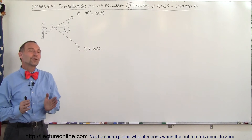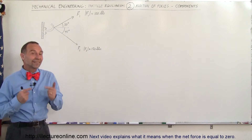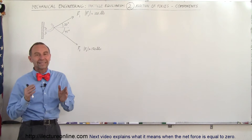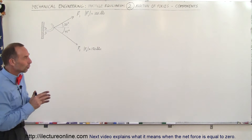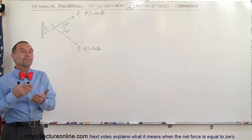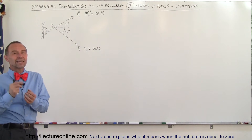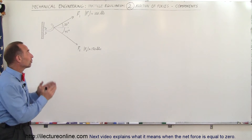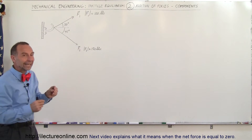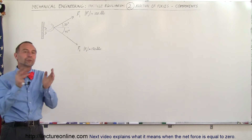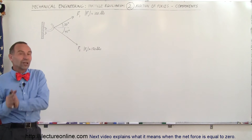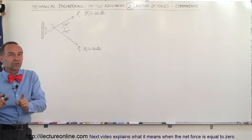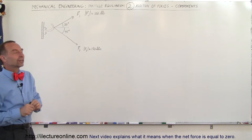Welcome to Electron Line. In this video we're going to do the exact same problem as in the previous video, but now we're going to find the exact resultant force by calculating the X and Y components — the vertical and horizontal components of each of the forces acting on the hook — and adding all the vertical components together, adding all the horizontal components together, and then find the magnitude and the direction of the final force.